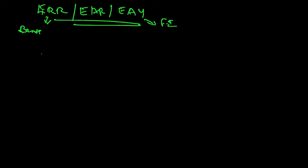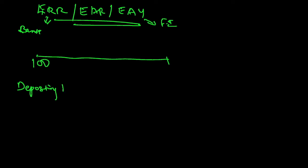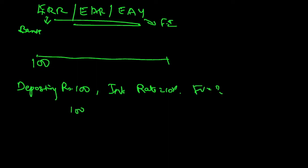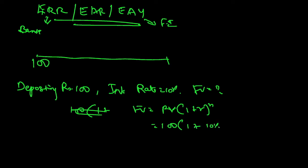Let's start with a simple example. Imagine you are investing 100. After one year, if it is growing at the rate of 10%, you deposit 100 in a bank offering 10% interest. The future value formula is: FV = PV × (1 + r)^n, so 100 × (1 + 10%) = 110.